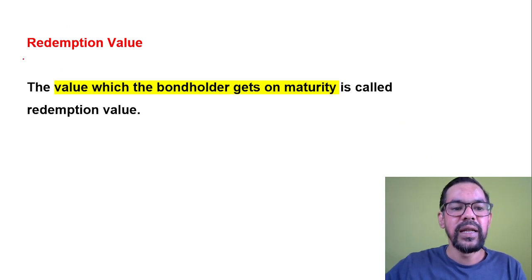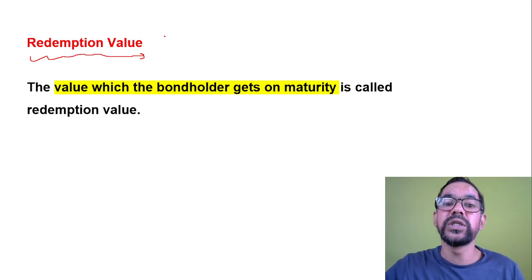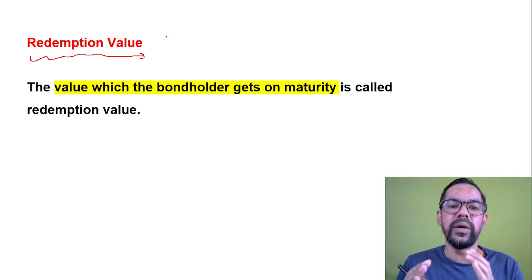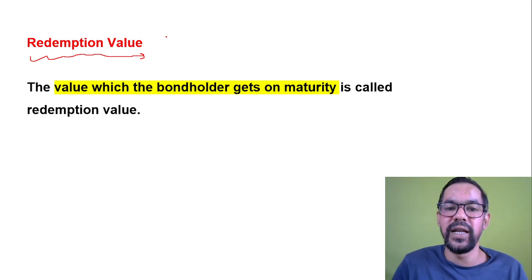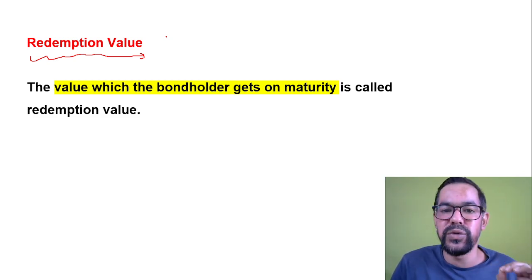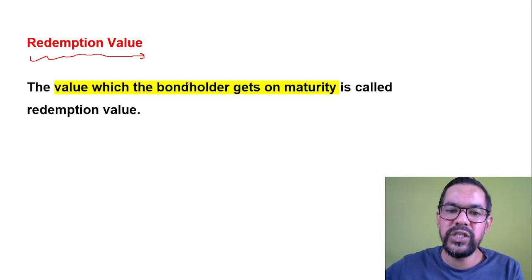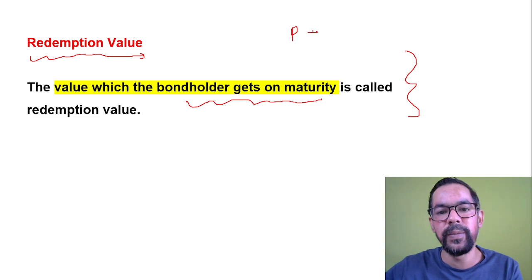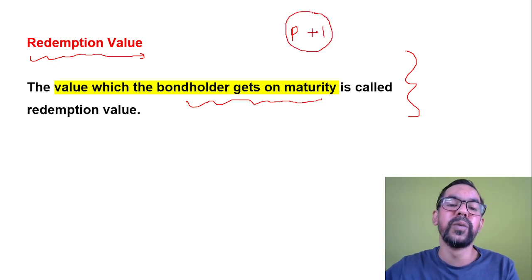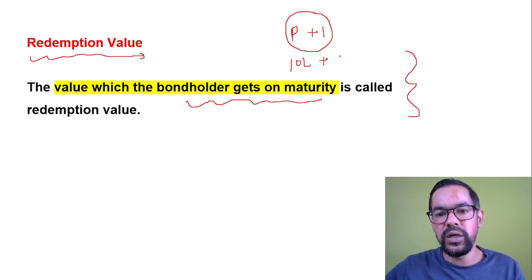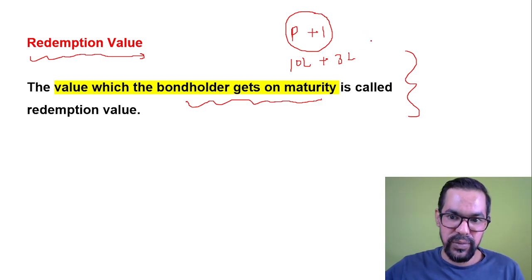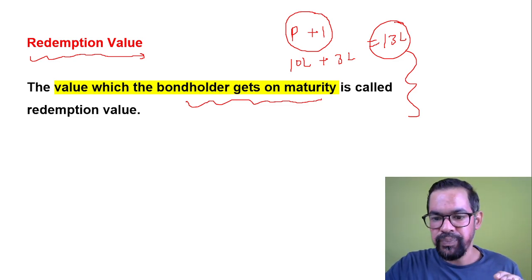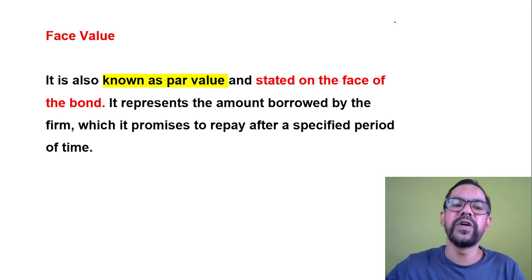Next is redemption value. For example, an investor who invested 10 lakh rupees in bonds with a 10-year maturity, where the overall coupon income was 3 lakh rupees — the redemption value would be 10 lakh plus 3 lakh, which is 13 lakh rupees. The value which the investor gets on maturity is called redemption value. It includes principal plus interest: the principal was 10 lakh and interest was 3 lakh, so 13 lakh is the redemption value.